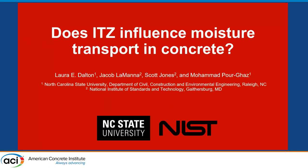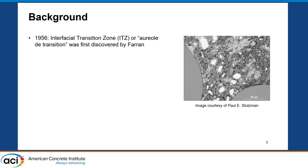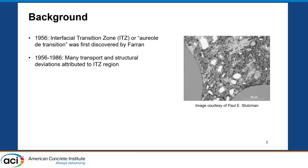A little bit of background. The Interfacial Transition Zone, or ITZ, as I'll refer to it throughout the rest of this presentation, was first discovered by Perron in 1956. Basically, this is a region right along the aggregate that is supposed to be a slightly more porous region relative to the bulk cement paste. Over the years, there have been many transport and structural deviations attributed to this ITZ region, and it's become its own area of research.